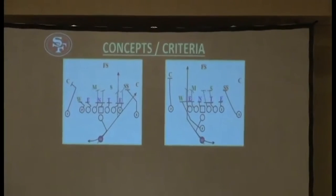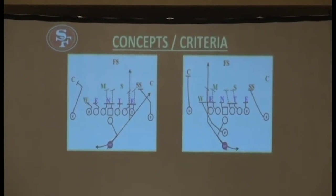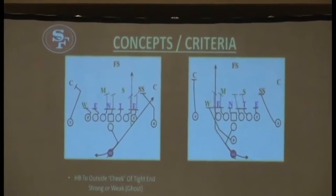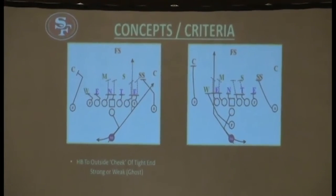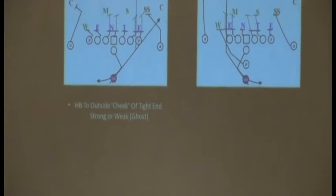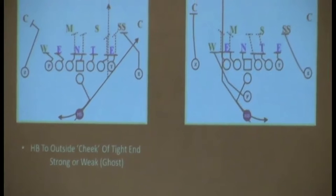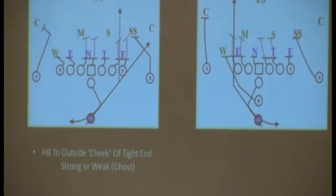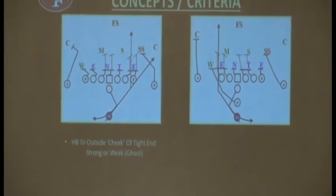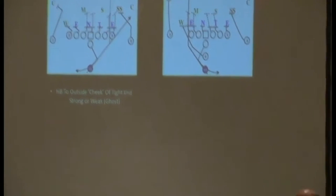Some of the key things I'll start talking about — we're going to take the halfback to the outside cheek of the tight end. That's strong or weak. We call it to the ghost tight end if it's to the weak side. We want to run that back out there. He is as important to the zone blocking scheme as the blocks. I think it's imperative for him to know that.